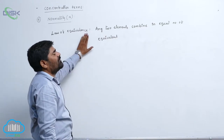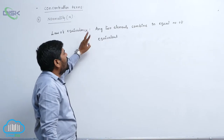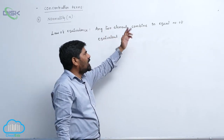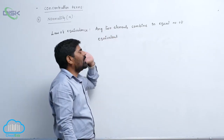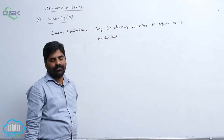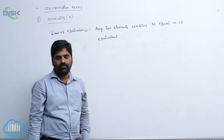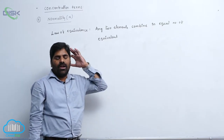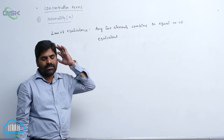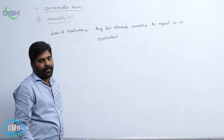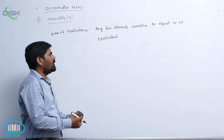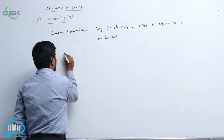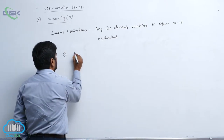According to the law of equivalence, any two elements combine in equal number of equivalents. For example, example number one: magnesium chloride.